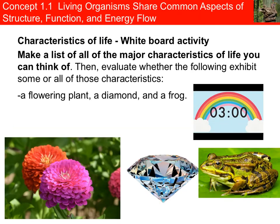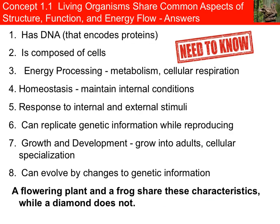I want you to think about these three pictures and evaluate whether they exhibit characteristics of life. Back in regular biology, you should have learned the properties of life — seven to ten of them. What properties do they have to determine whether they are a living thing or not? Obviously the flower and the frog were living things, and the diamond in the middle was not. The things you need to know that all organisms share are the properties of life.